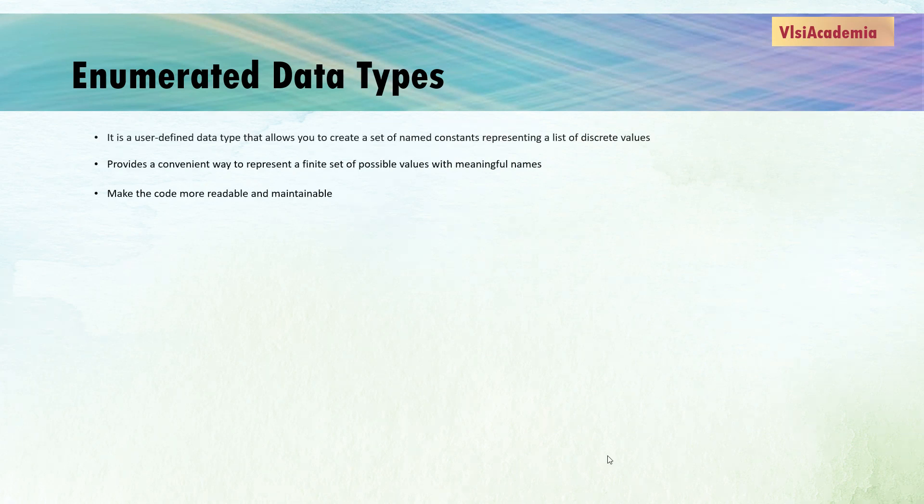Enumerated data type, commonly known as enum, is a user-defined data type in a programming language that allows you to create a set of named constants representing a list of discrete values. It also provides a convenient way to represent a finite set of possible values with meaningful names, making your code readable and maintainable.